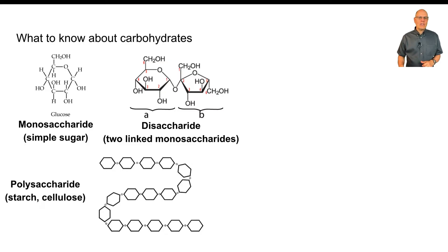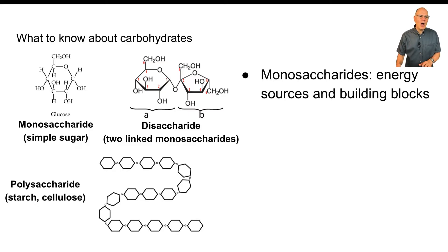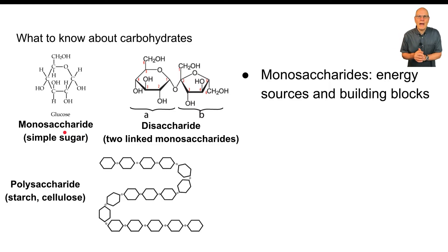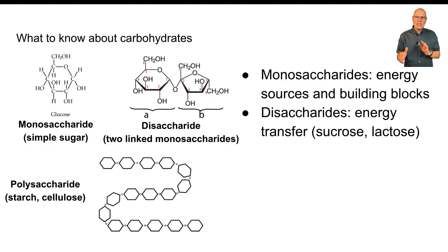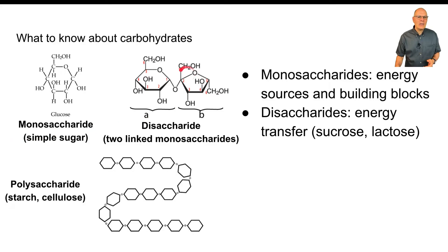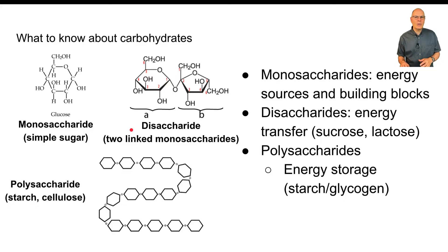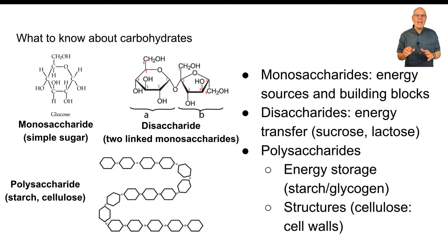What do you need to know about carbohydrates? The monomer of carbohydrates is monosaccharides — simple sugars, some of which are all-important in biology, like glucose, which is essentially the fuel of life. Disaccharides show up less in the course, but you might have a question about lactose intolerance, which doesn't make sense unless you know that lactose is a disaccharide composed of two linked monosaccharides. Then you have polysaccharides used for energy storage, like starch in plants and glycogen in animals, and polysaccharides with structural roles like cellulose, which makes up the cell walls of plants.